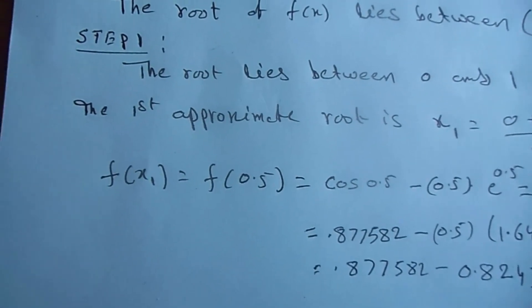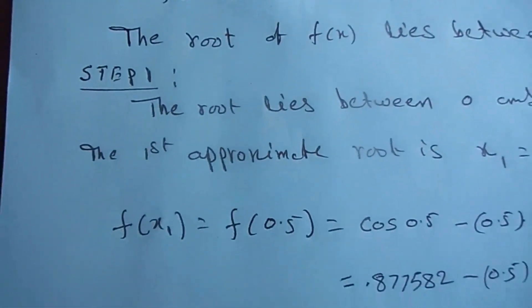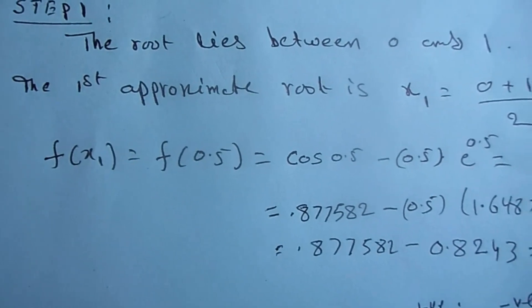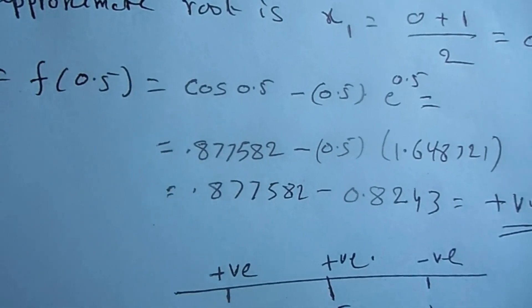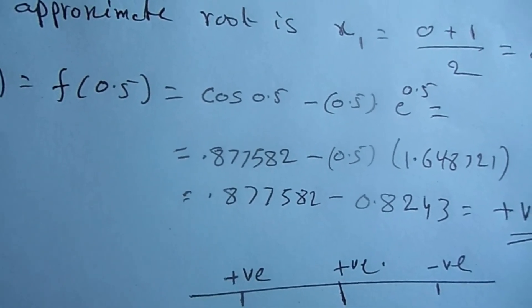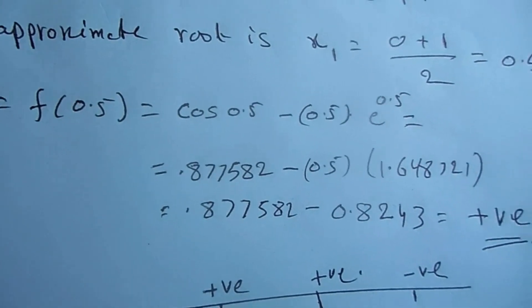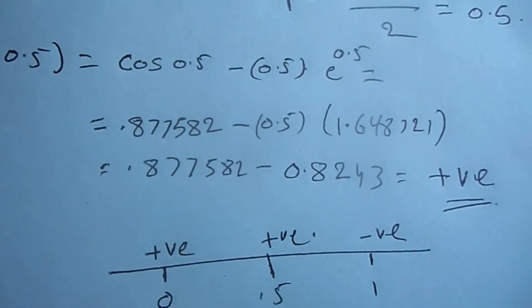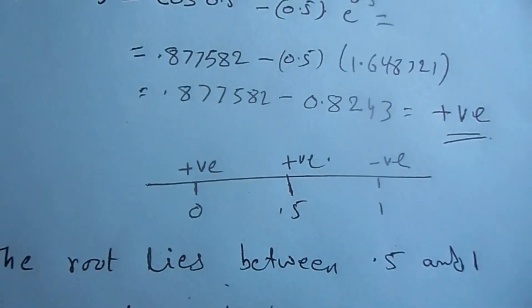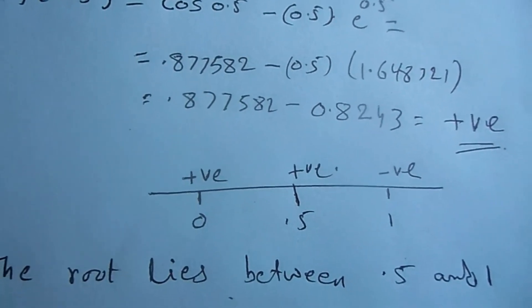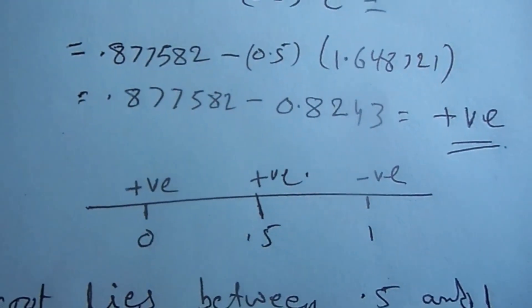We have to compute f(x1). f(x1) = cos(x) minus x·eˣ. f(0.5) = cos(0.5) minus 0.5·e^0.5. Using a calculator, cos(0.5) ≈ 0.87582, and this gives a positive value — 0.87 minus 0.82 is positive. At x=0, f is positive; at x=1, it is negative; at the midpoint x=0.5, it is positive. So the root lies between 0.5 and 1.